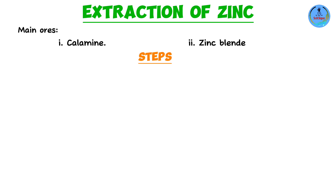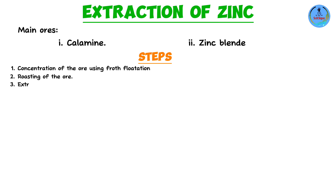There are three main steps involved in extraction of zinc: step one, concentration of the ore; step two, roasting; and step three, the actual extraction process.